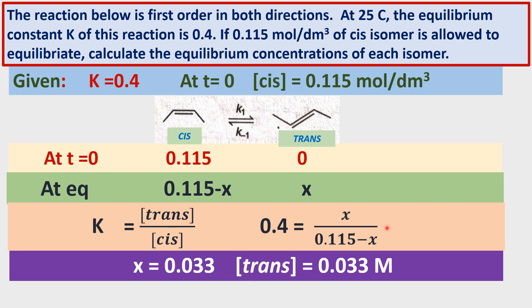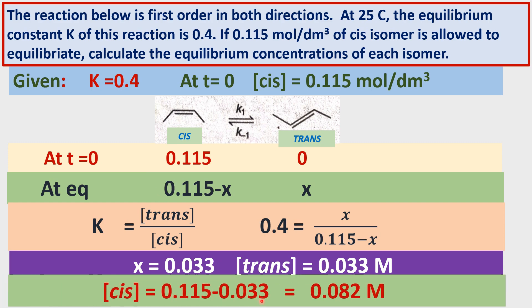On substituting, X is evaluated: X is equal to 0.0333 moles, which is the concentration of the trans isomer — 0.033 moles per liter. Once we know X, we substitute to calculate the CIS isomer concentration: 0.115 minus 0.033, which gives 0.082 molar. These are the CIS and trans concentrations at equilibrium.